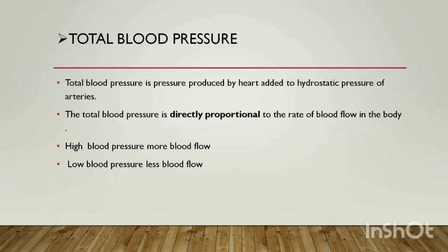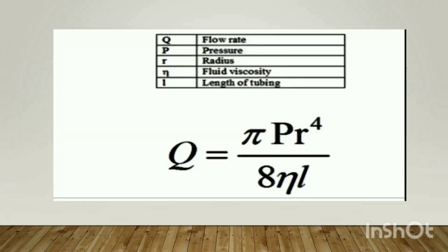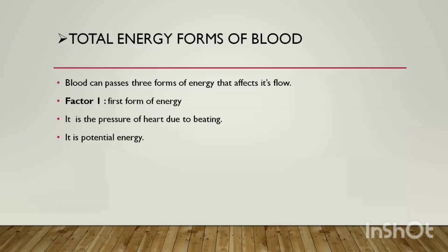Blood pressure is directly proportional to the rate of blood flow. The greater the rate of blood flow, the greater the blood pressure. Higher blood pressure means greater blood flow; lower blood pressure means lower blood flow. An equation is given here that allows us to calculate total blood pressure, using π, pressure (P), radius (r), viscosity (η), and length (L).